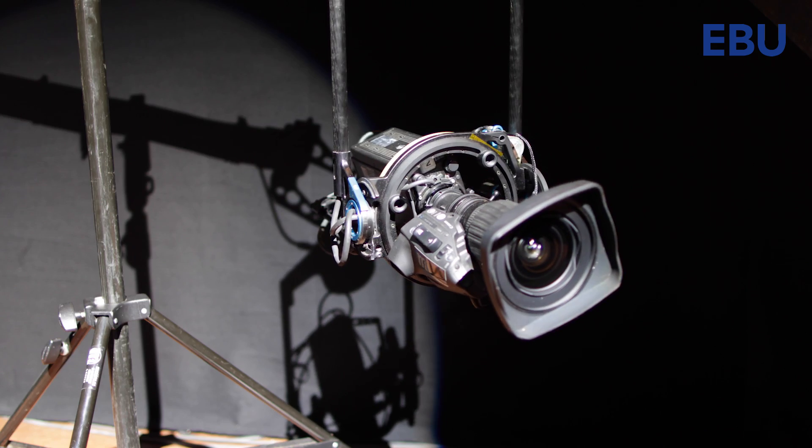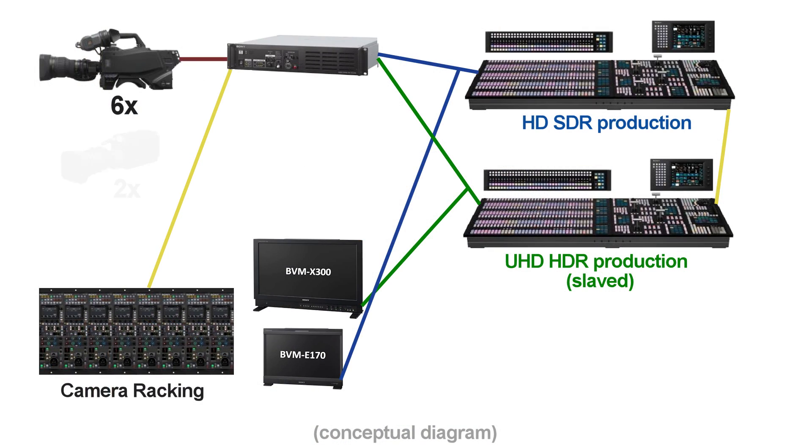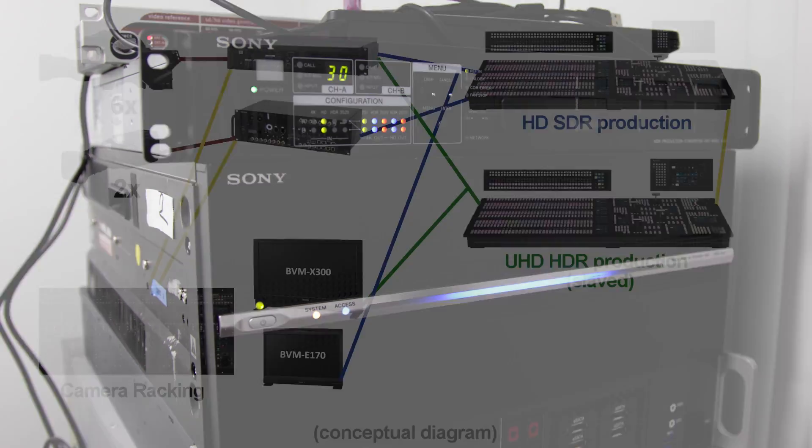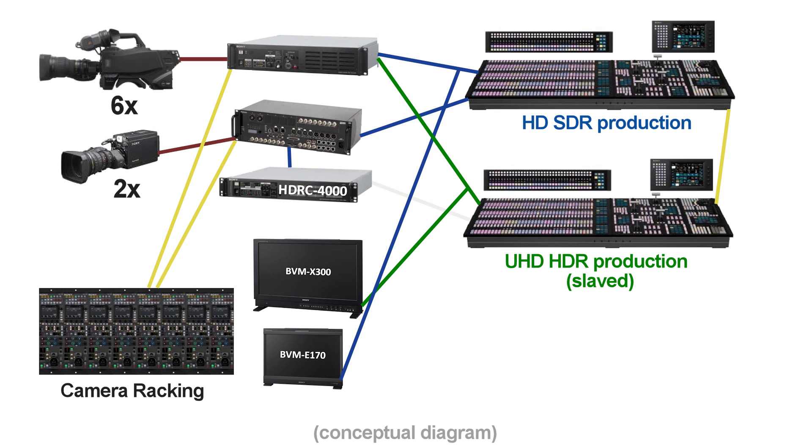It is also the aim to investigate a mixed production environment based on the fact that we have HD-based sources — something we expect to face in practice. In this production, we have two extra cameras which are not UHD HDR capable. So we insert them into the main production workflow using the HDRC 4000, which converts the HD 1080 50i ITU-709 color space cameras into UHD resolution, 50p frame rate, wide color space BT-2020, using S-Log3 as the EOTF for HDR.